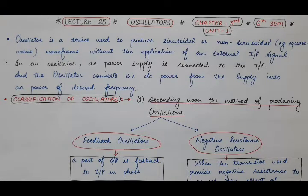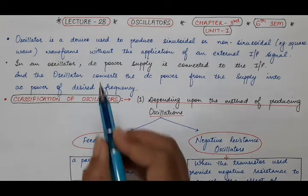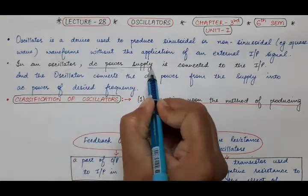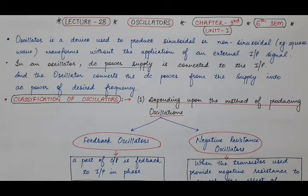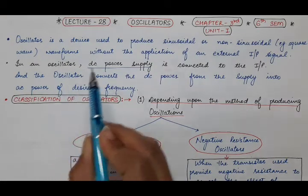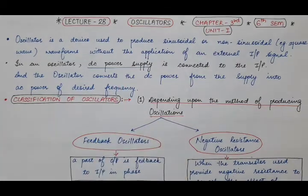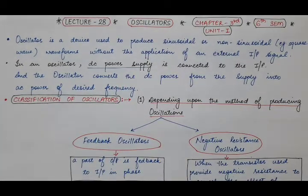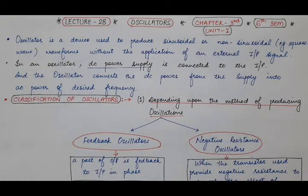Non-sinusoidal means square wave or rectangular wave, but without the application of an external input signal. The oscillations are sustained oscillations — the oscillator continues to produce oscillations even in the absence of an external input signal. In an oscillator, a DC power supply is connected to the input, and this oscillator converts that DC power from the supply into AC power of any desired frequency.